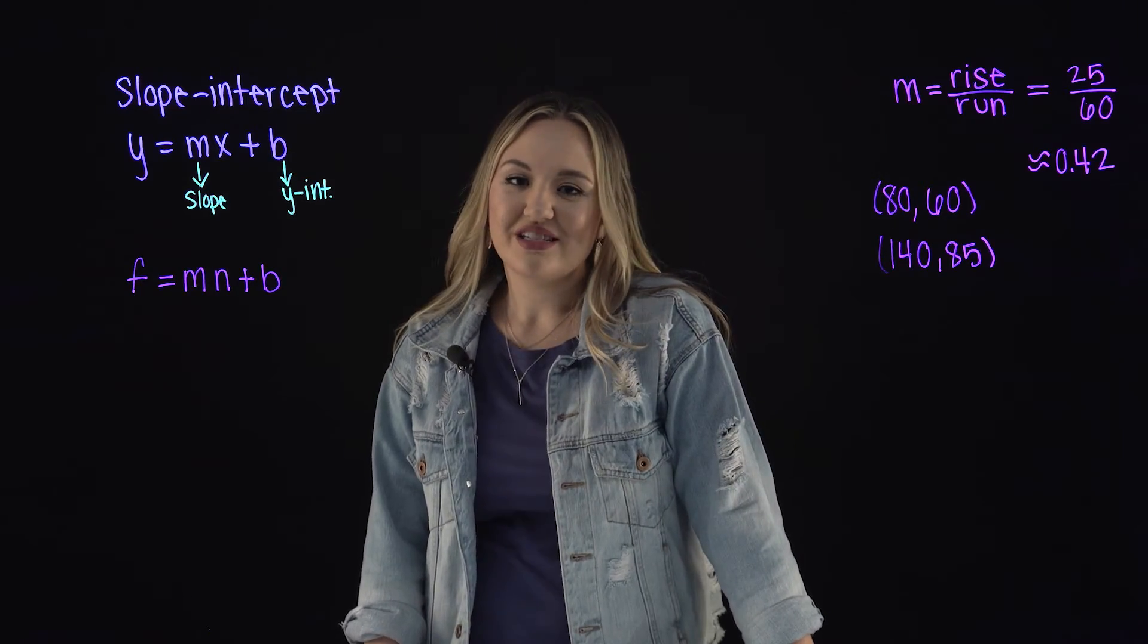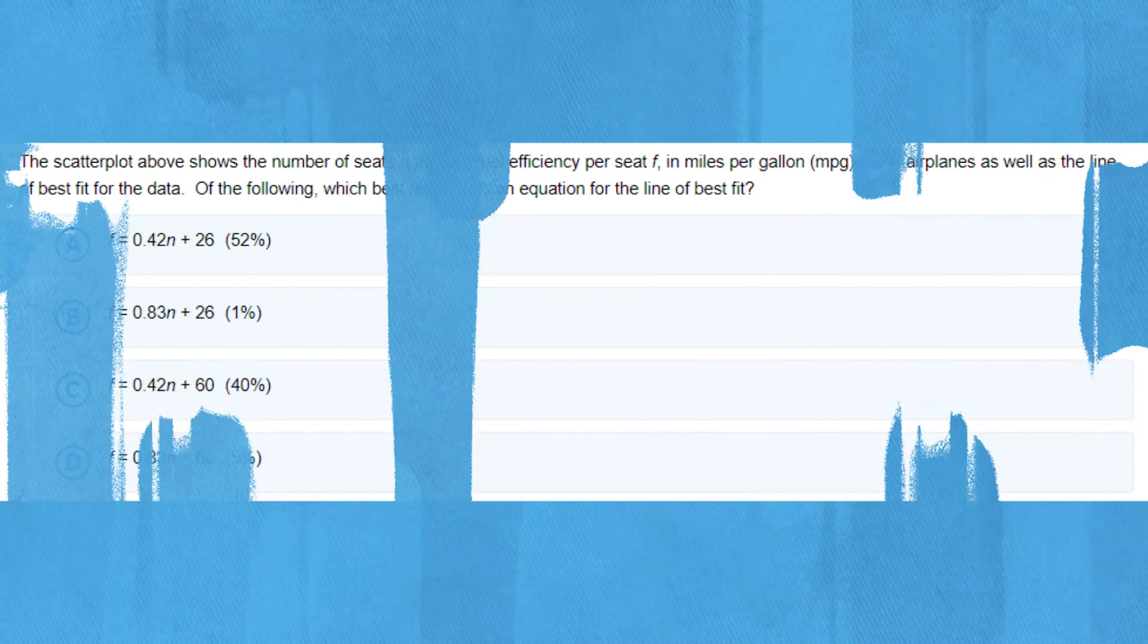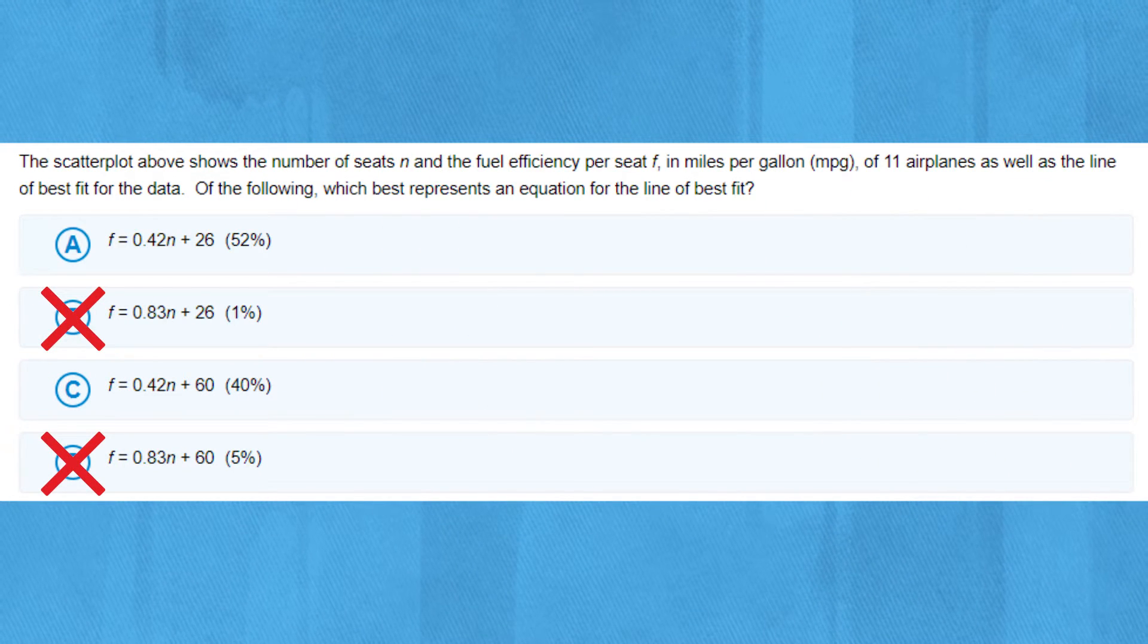So looking back at our answer choices, that means we can eliminate choices B and D because they do not have slopes equal to 0.42.